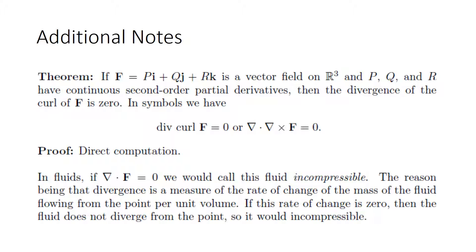Some additional theorems: if f is a vector field on R3 and the components P, Q, R have continuous second-order partial derivatives, then the divergence of the curl of f is zero — that is, del dot (del cross f) equals zero under these conditions, proven by direct computation. In fluids, if the divergence equals zero, the fluid is incompressible. Divergence measures the rate of change of mass of the fluid flowing from the point per unit volume; if this rate is zero, the fluid does not diverge from the point, so it is incompressible.